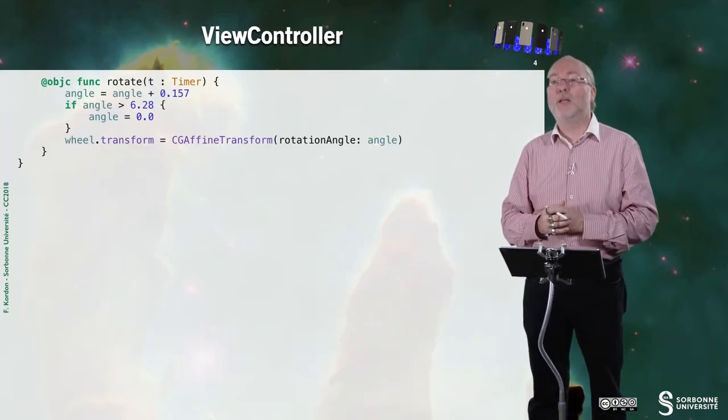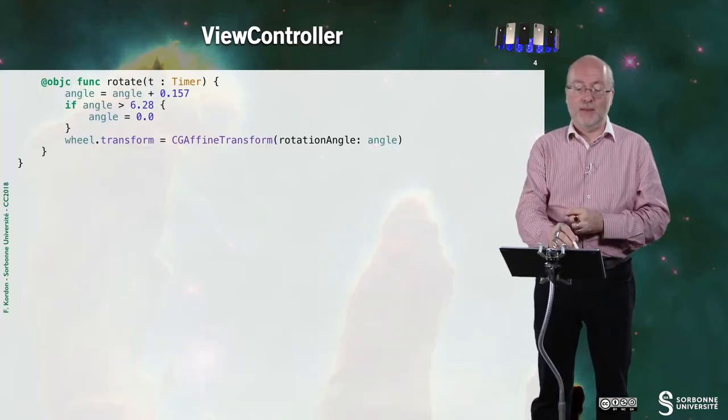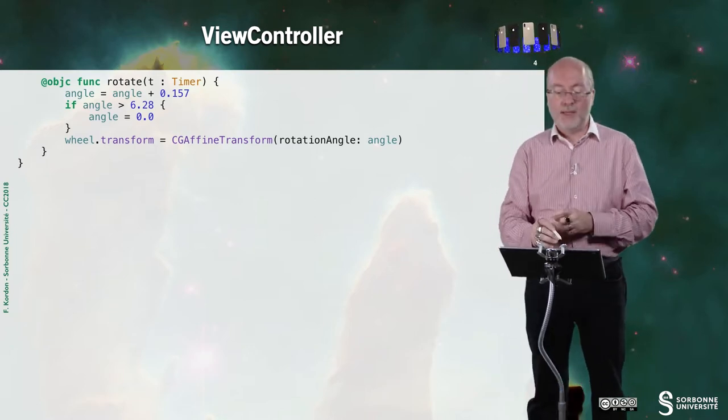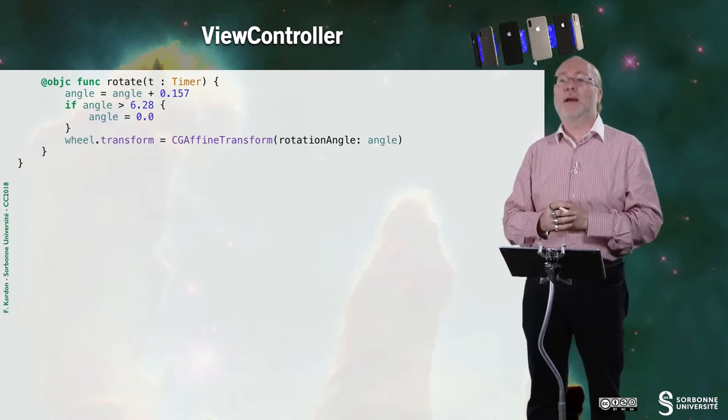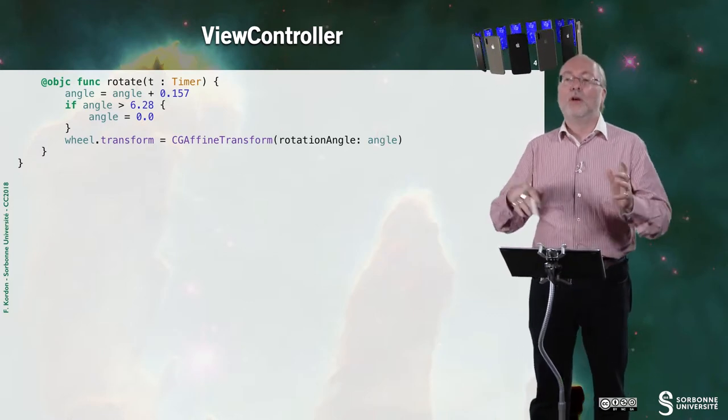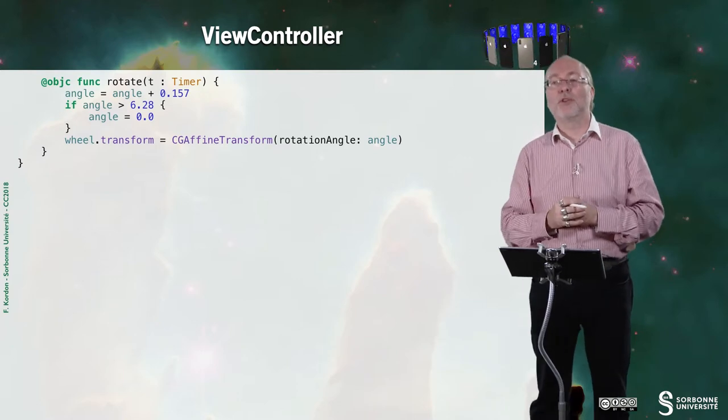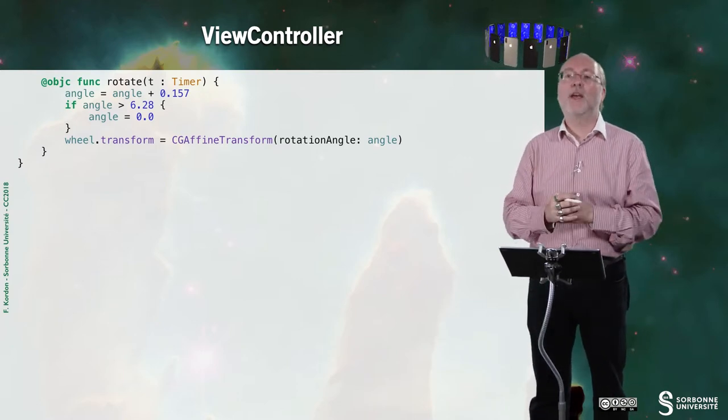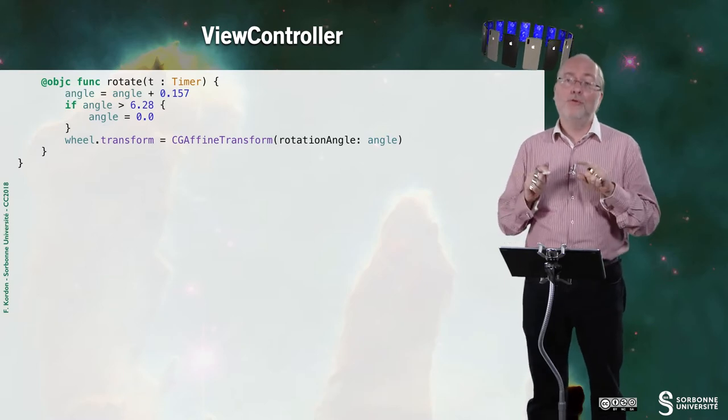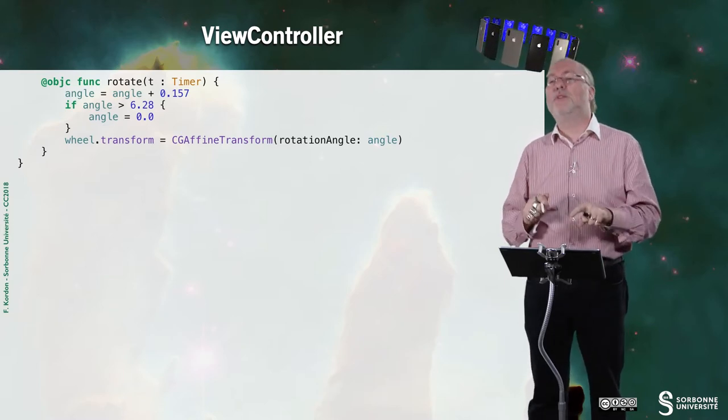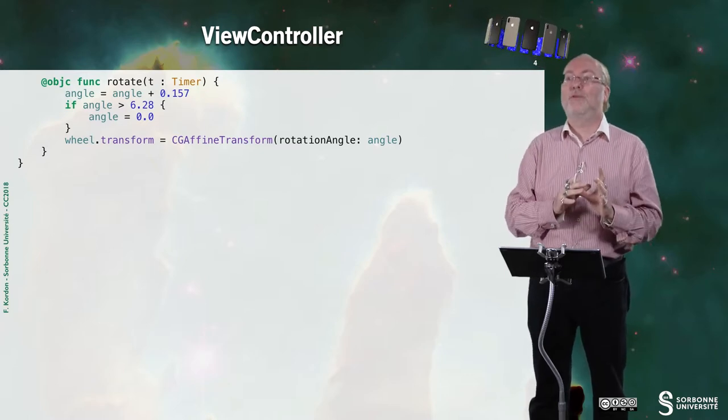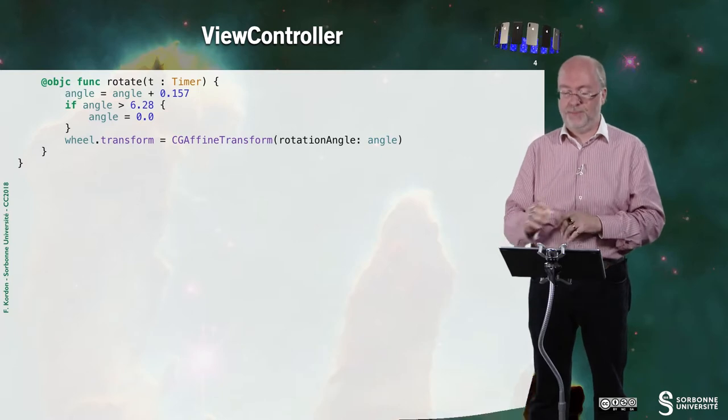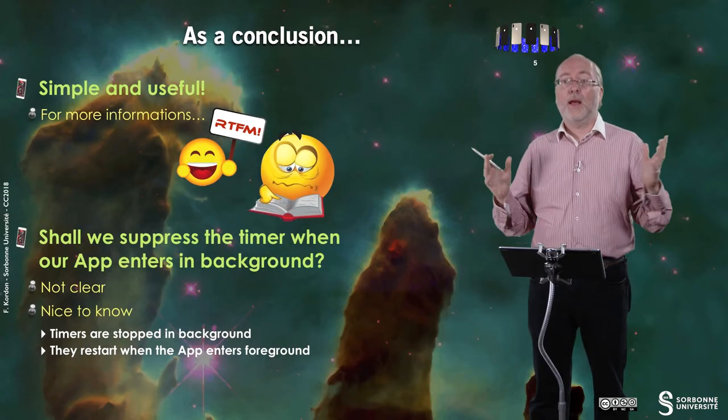Finally, I have the function rotate. It takes a timer in input. I just have the angle progressing a little bit. If I'm over 2π, then the angle is back to zero. Then I do an affine transformation with a rotation to display the wheel again. You notice that when I do that, it's not a problem because for the wheel, I set the center of the wheel instead of setting the frame. And that's all.